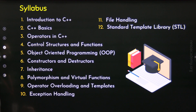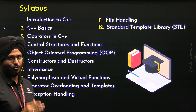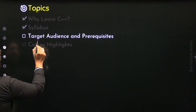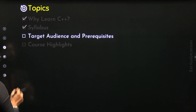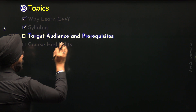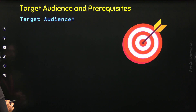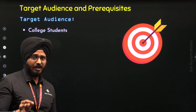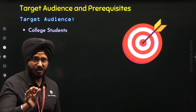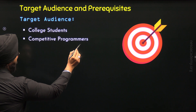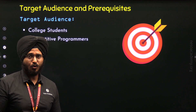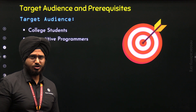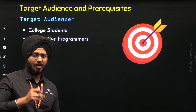So those are all the chapters of this course, and I hope the syllabus is completely clear to you. Now let's move to the next topic: target audience and prerequisites. The first type of audience is college students — if you are a college-going student, this course may be part of your curriculum. The second type is competitive programmers — if you want to become a competitive programmer, learning C++ from this course is the best choice.